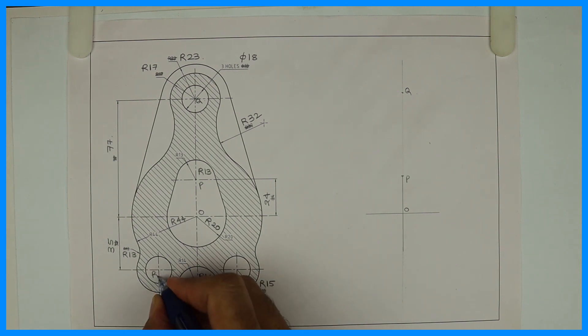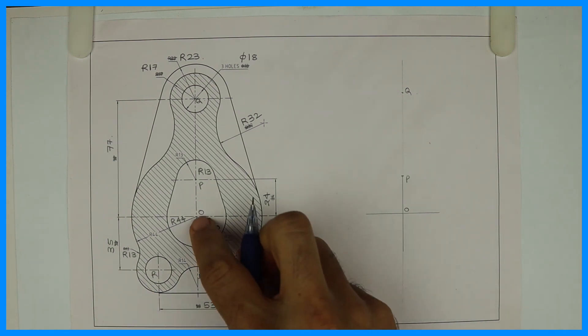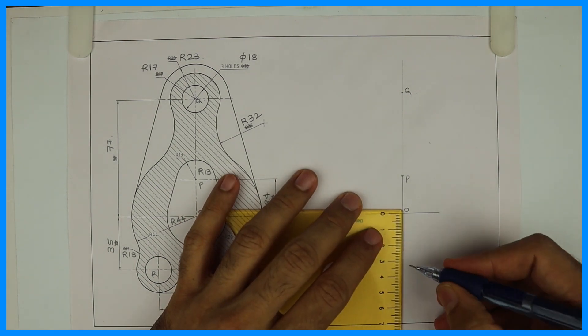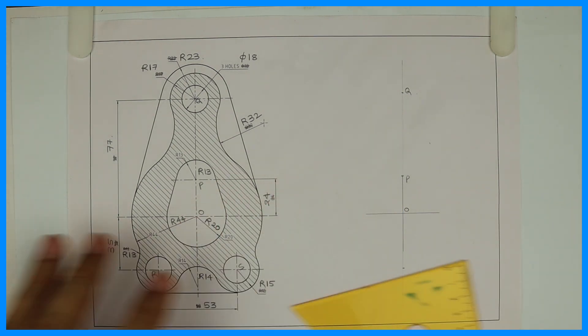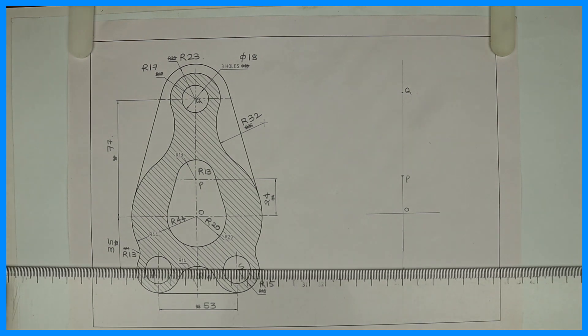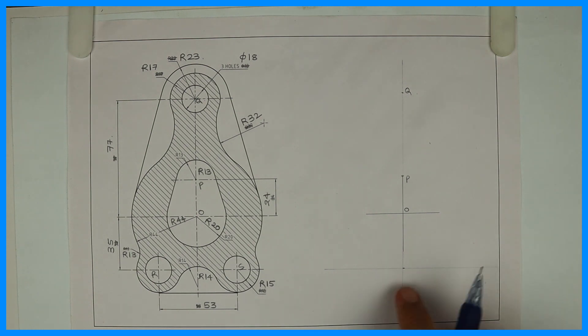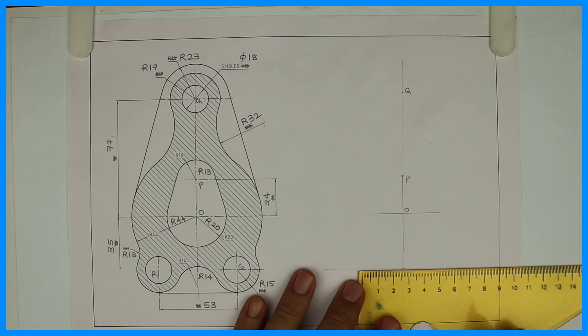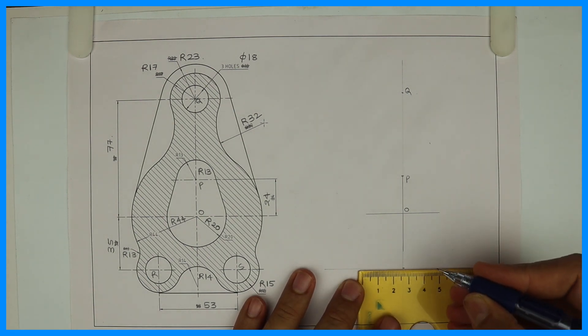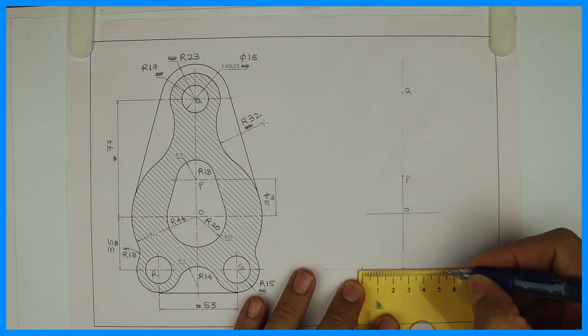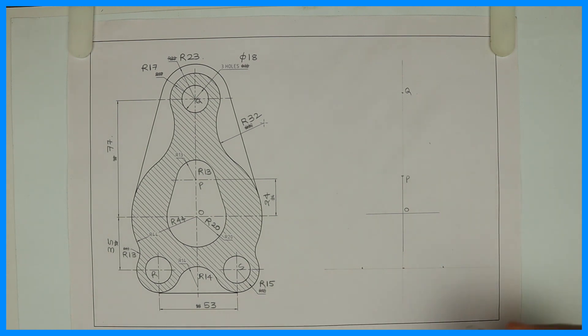Then this is how much? 35. This is R and S. So from O you go down by 35. And this is 53. So take 26.5, 26.5 on both the sides. R and S.